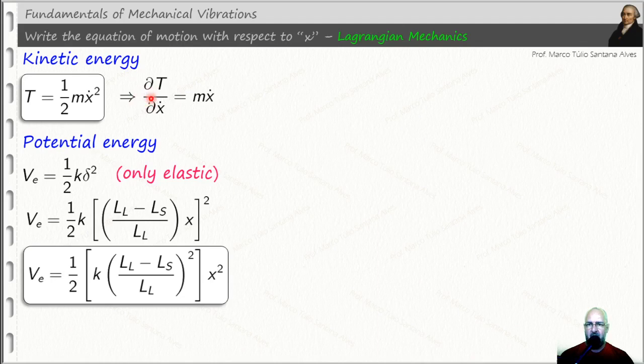Firstly, we are calculating the partial derivative of the kinetic energy with respect to x dot, which equals m x dot. But we need the other term here, the derivative with respect to time for this expression here. Finally, we get m x double dot.